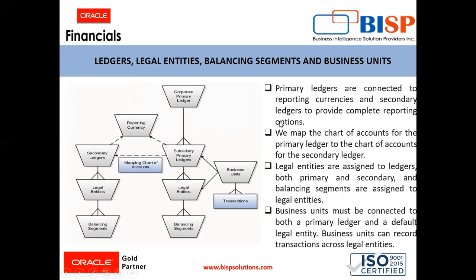A primary ledger contains the four Cs which are required for creating a primary ledger. If any of these Cs changes, there will be a requirement for another primary ledger.